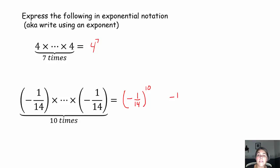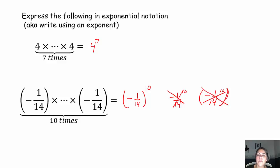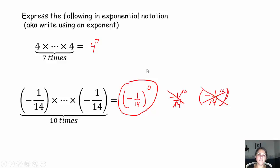If you accidentally wrote it with both items inside parentheses — both the exponent and the base — please fix that. Those values will not match when simplified. If you have a negative base, you put it within parentheses and you put the power it's raised to outside of the parentheses.